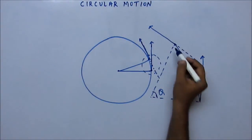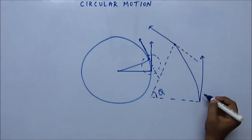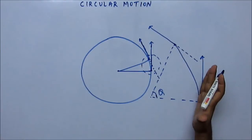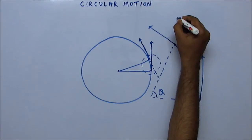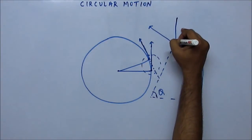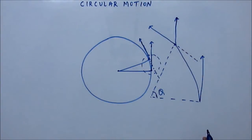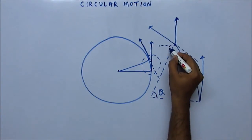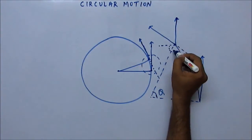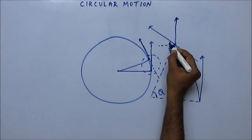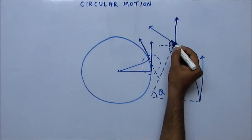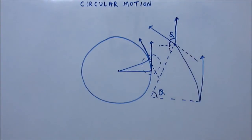The position vector and the velocity vector at the new position are like this. We know vectors can be moved parallel to themselves. Moving this vector parallel to itself, if this angle is theta, this angle is also theta. The velocity vector is tangential so this angle is 90 degrees, making this angle 90 minus theta, and this again is 90 degrees, so this angle is theta — easy to see from basic geometry.